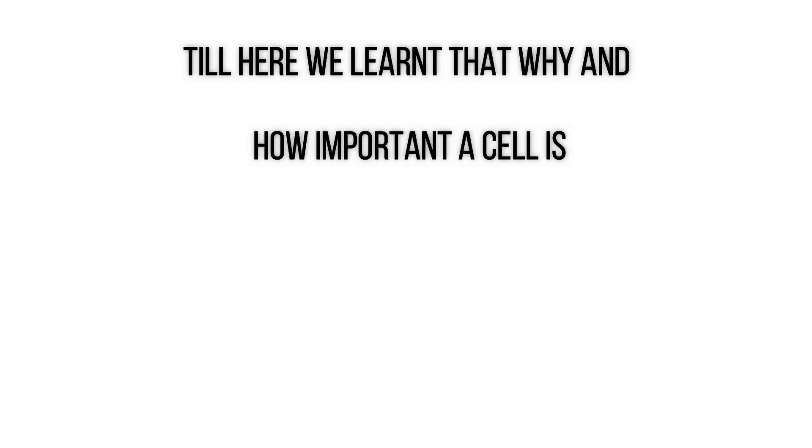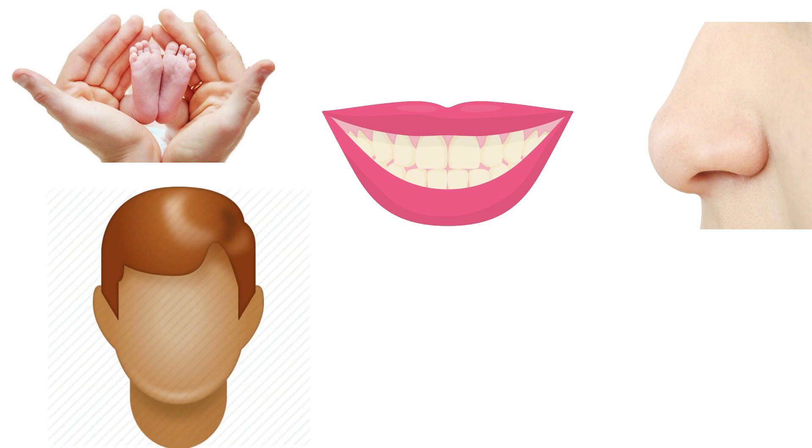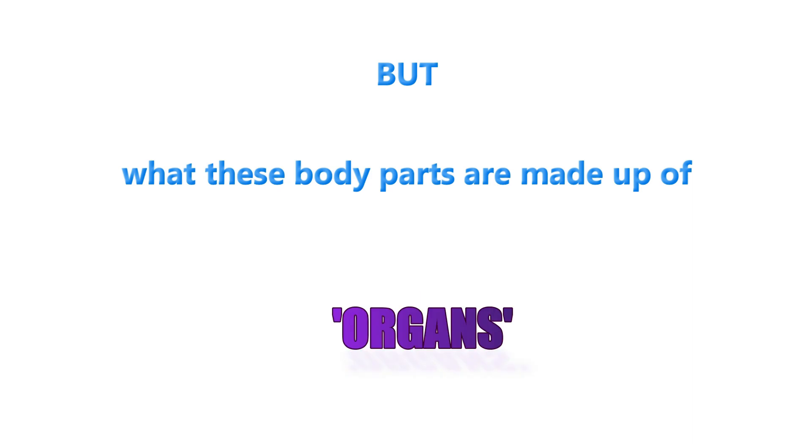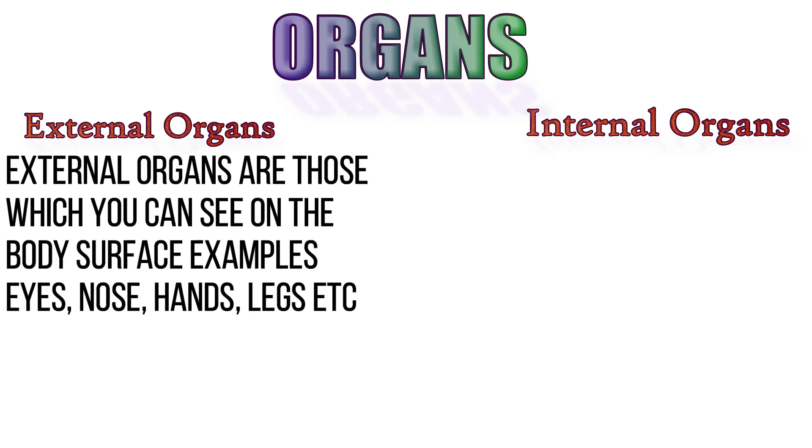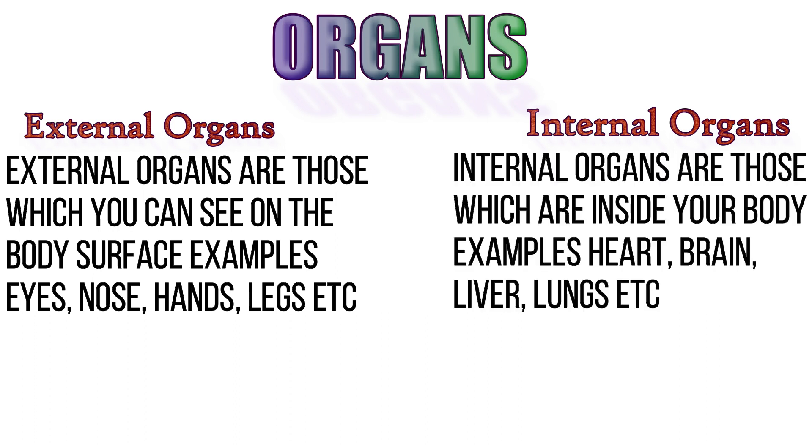Now we are going to the second part. Now as we all know different parts of a body since when we were in Montessori. But what these body parts are made up of? These body parts are also known as organs. We have external organs and internal organs. External organs are those organs which you can see on your body surface. Example eye, nose, hands, legs, etc. While internal organs are those organs which are present inside your body. And you can see those organs when you will cut a body. Of course when you will become a doctor.